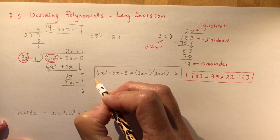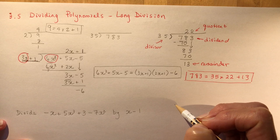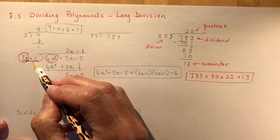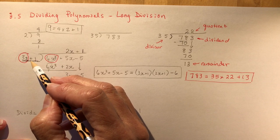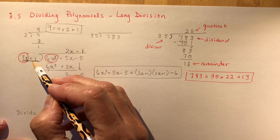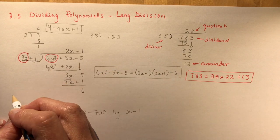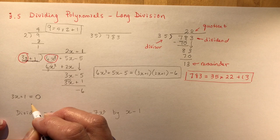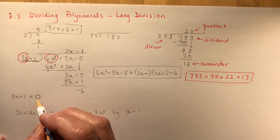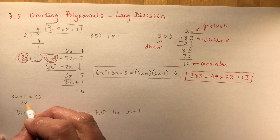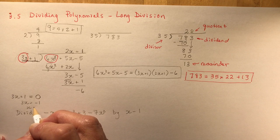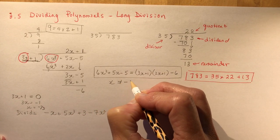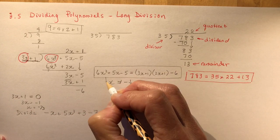There's one more thing to be careful about. When you're dividing by something, it's in the denominator and it can never equal zero, so there's a restriction on the variable. Here, 3x plus 1 cannot equal zero, so 3x equals negative 1, meaning x equals negative one-third. So x is not equal to negative one-third — that's the restriction.